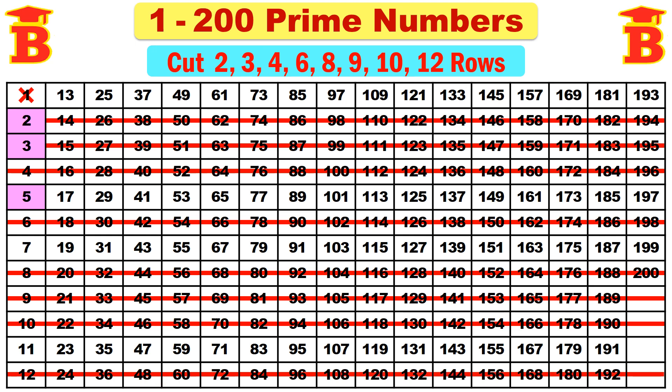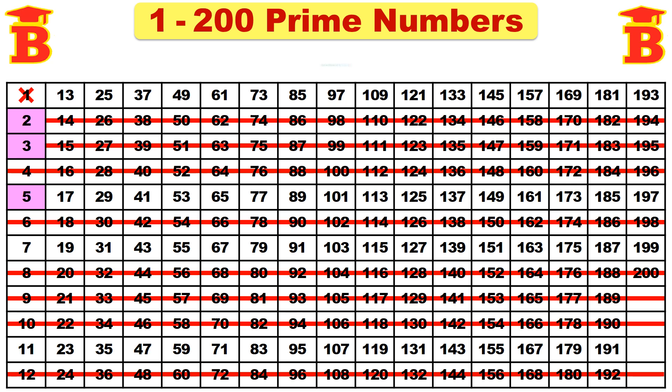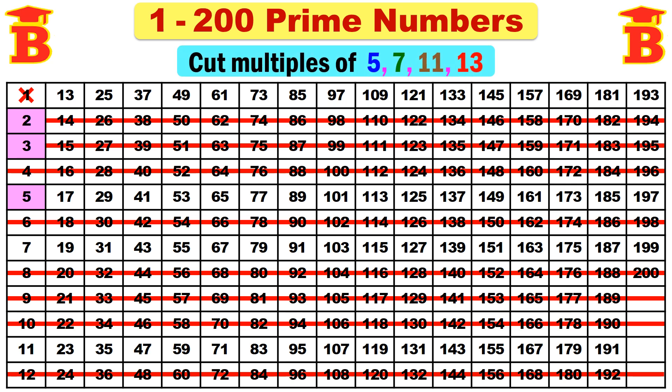Now we are left with 4 rows: the 1st row, 5th row, 7th row, and 11th row. We have prime numbers only in these 4 rows. There is one more condition: we have to cut the multiples of 5, 7, 11, and 13. After that, all the remaining numbers will be prime numbers.